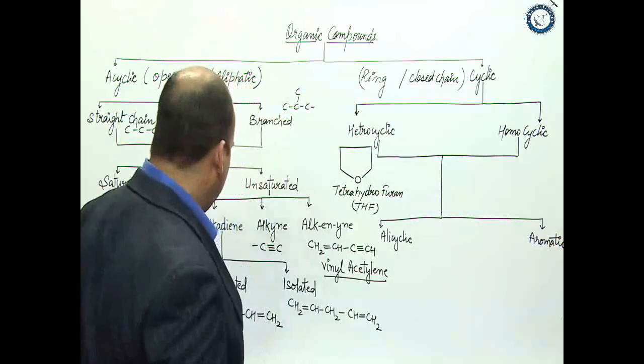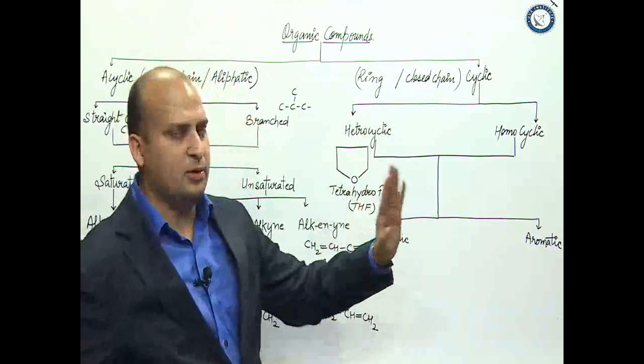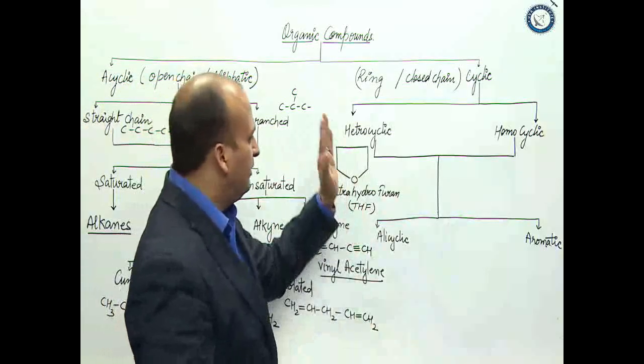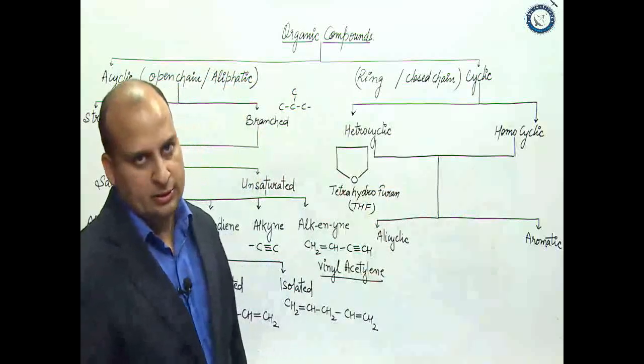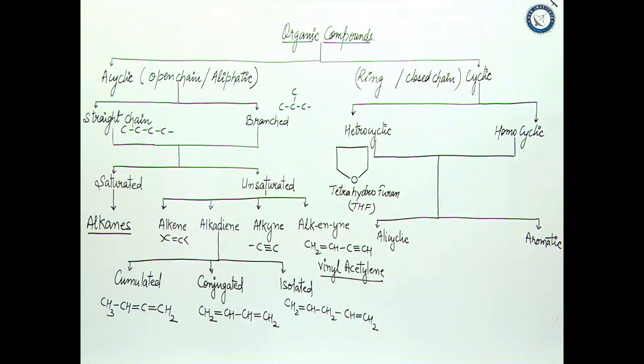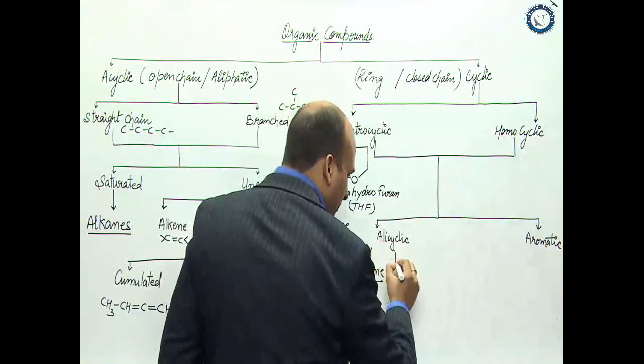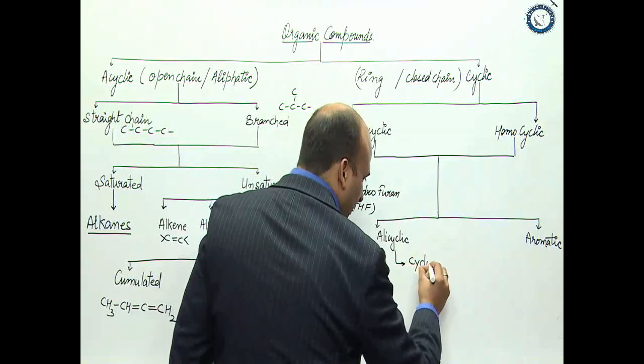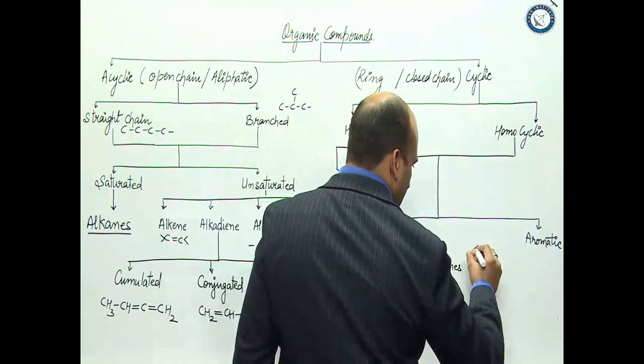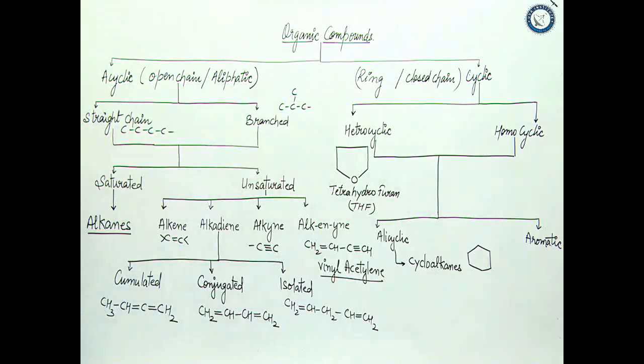I am not going to talk about heterocyclic because in heterocyclic we don't need alicyclic aromatic classification right now. We will talk about homocyclic alicyclic and aromatic. But remember that even in heterocyclic there are alicyclic and aromatic compounds. Here if you talk about alicyclic, you have cycloalkanes. All single bonds - this is cyclohexane.